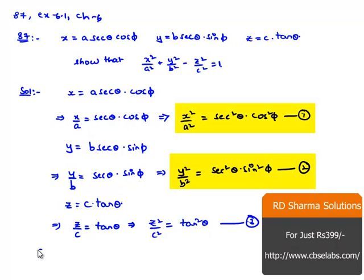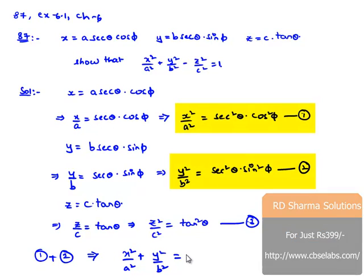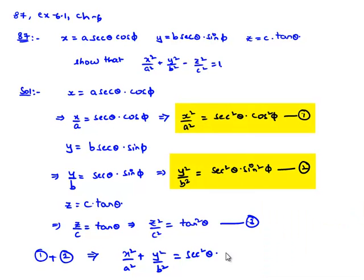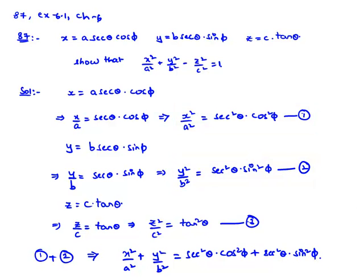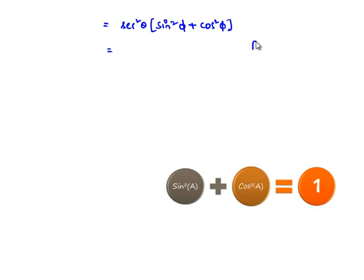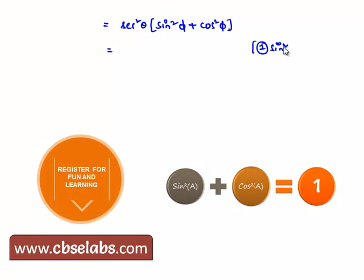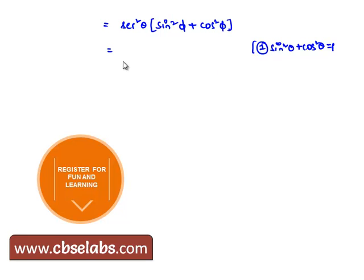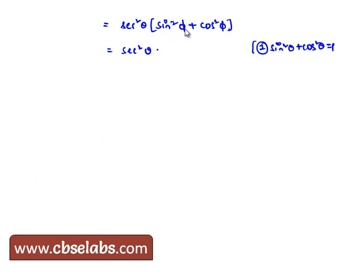Now let us add equation number 1 and 2. Then we get x square by a square plus y square by b square is equal to secant square theta into cos square phi plus secant square theta into sin square phi. Taking secant square theta as common, we get secant square theta into sin square phi plus cos square phi. From the identity sin square theta plus cos square theta is equal to 1, we get secant square theta into 1, that is secant square theta.